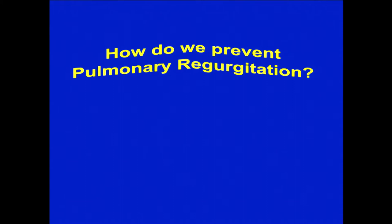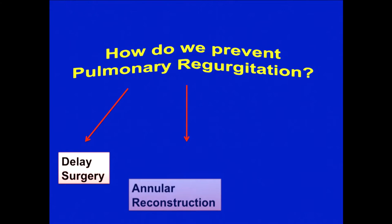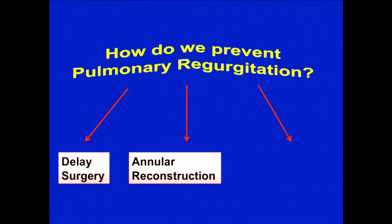How do we prevent pulmonary regurgitation? You can delay the surgery — palliate the patient first, let the pulmonary annulus grow, and then go for total correction. Number two, you could deal at the annular level doing a reconstructive procedure. Or number three, you could deal at the valvular level to do some form of reconstruction.